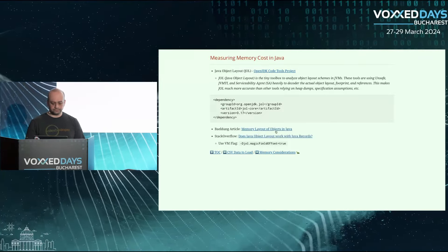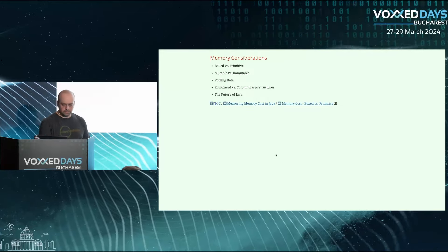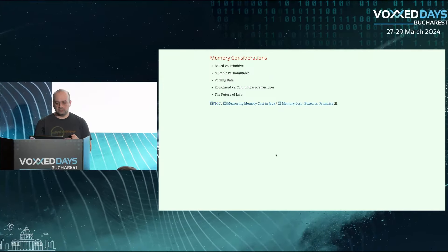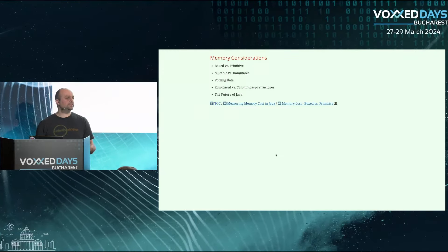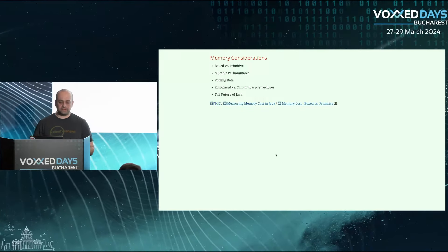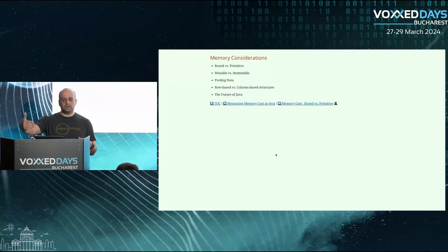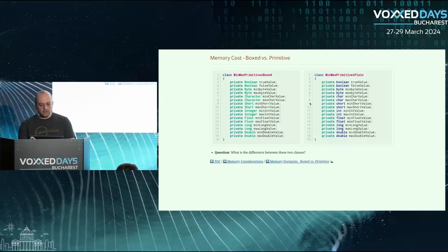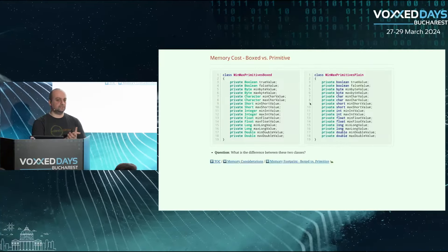The memory considerations we wanted to explore were: boxed versus primitive data types — is there a big difference? Mutable versus immutable data structures — do you need to think about that? Row-based versus column-based structures. And what the future might bring from OpenJDK projects. Let's start with a quick exercise: what do you think the memory difference is between two versions of a class — one using boxed values and one using primitive values?